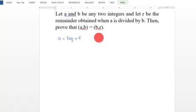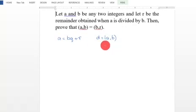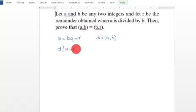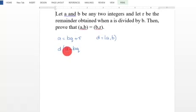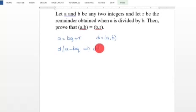Let D be GCD of A and B. So D divides both A and B. Since D divides A and D divides B, we get D divides A minus BQ. So D divides A minus BQ, and since A minus BQ equals R, D divides R.